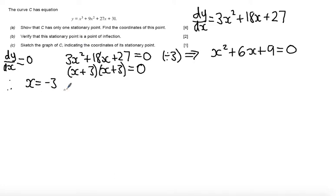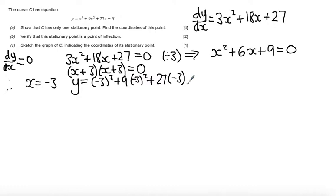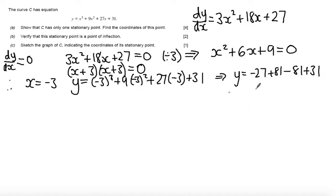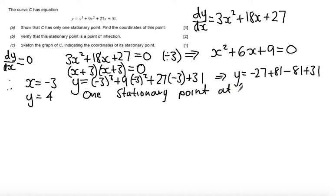I have the one stationary point as required. Finding the y-coordinate: y equals minus 3 cubed plus 9 lots of minus 3 squared plus 27 lots of minus 3 plus 31. That gives y equals minus 27 plus 81 minus 81 plus 31. The 81s cancel so y equals minus 27 plus 31, giving y equals 4. So the one stationary point is at x equals minus 3, y equals 4.